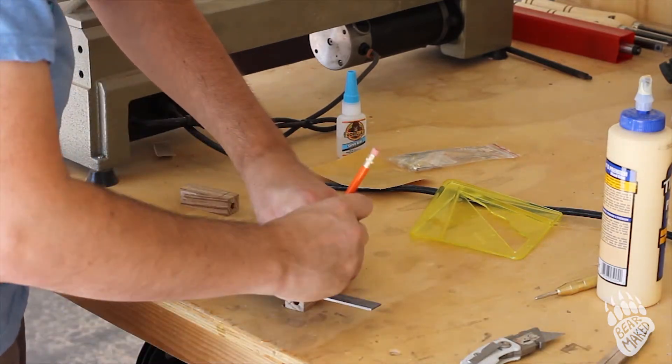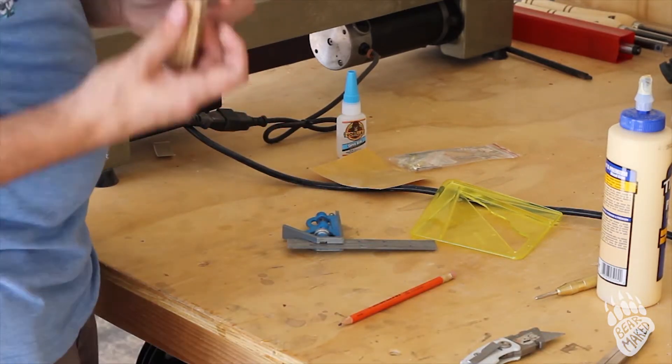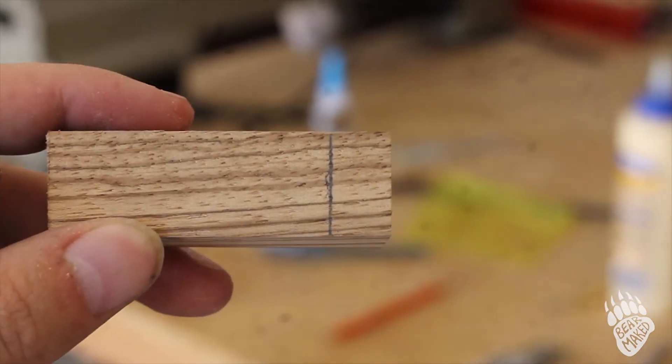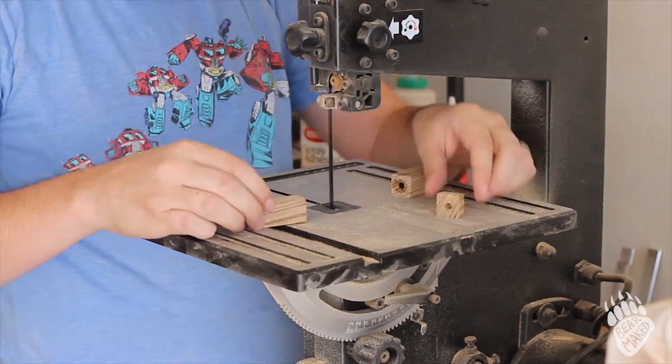And then to save myself time on sanding, I can use the bandsaw to slice that off at the line. And here you can see it's about half an inch. Slice it off.